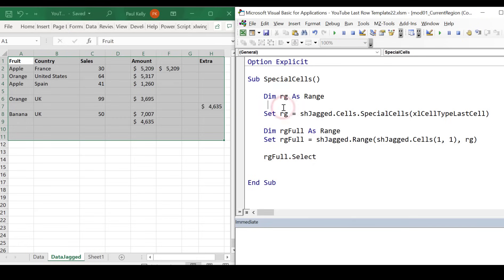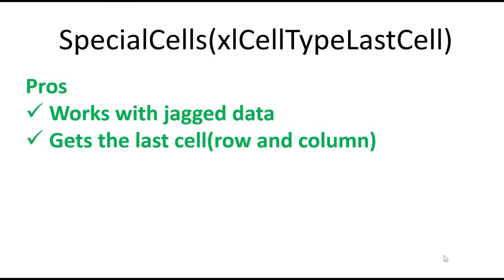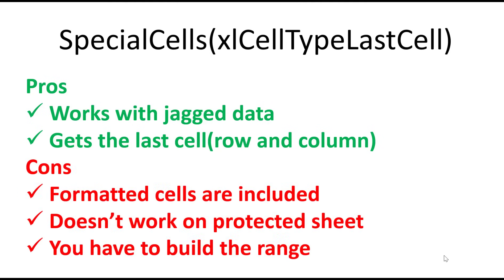So this means really that SpecialCells is basically unusable. SpecialCells initially seems to work well with jagged data and gets the last cell, which is very useful. However, the problem is formatted cells are included when searching for the last cell, and it doesn't work on a protected sheet. We're going to have to go and find something a bit better.